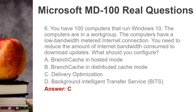Question 6. You have 100 computers that run Windows 10. The computers are in a workgroup. The computers have a low bandwidth metered internet connection. You need to reduce the amount of internet bandwidth consumed to download updates. What should you configure? Answer: C.